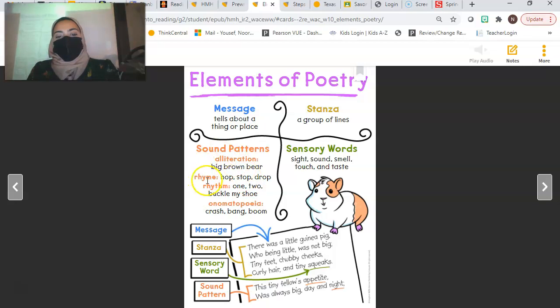Sound patterns also include rhythm, like one, two, buckle my shoe. Three, four, shut the door. It's rhythm. Sound patterns also include onomatopoeia. Everyone say onomatopoeia. Those are words that make sounds, like crash, bang, zoom, boom, beep. That's an onomatopoeia.